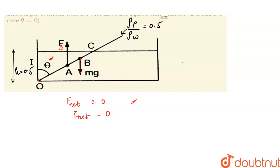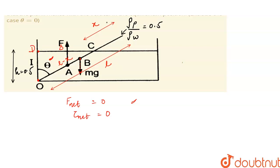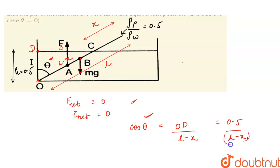Let's suppose that this length here is x meters, and the full length of the wooden plank is L. So OC here is L minus x. Considering point D, in triangle ODC, if we find out the length L minus x — we know that OD equals 0.5 — then cosine of theta equals OD divided by L minus x. So we can calculate theta if we can calculate L minus x.